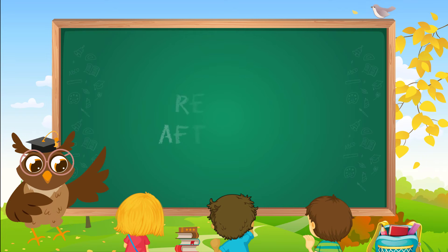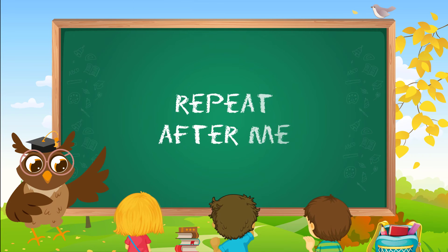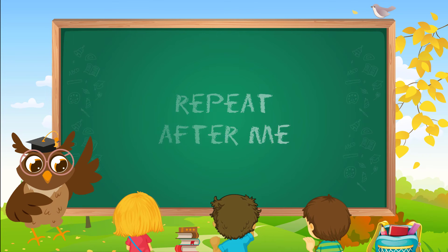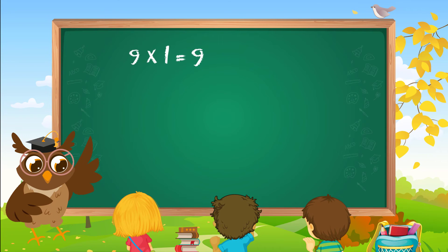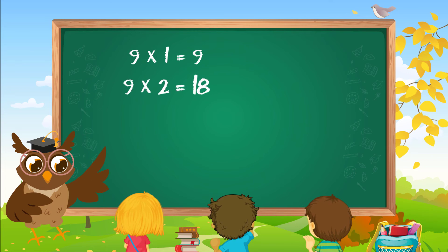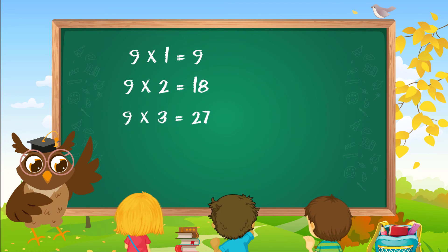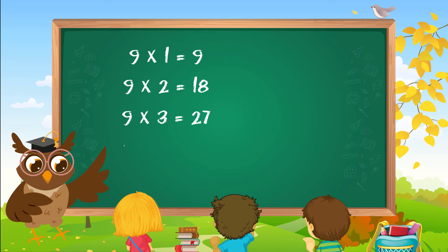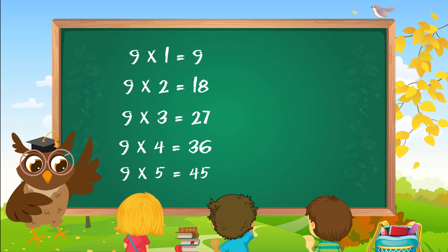Let's do this again. Repeat after me. Nine 1s are 9. Nine 2s are 18. Nine 3s are 27. Nine 4s are 36. Nine 5s are 45.